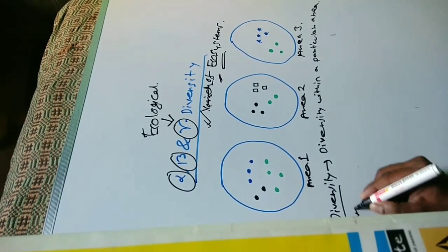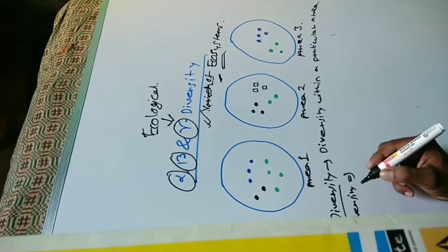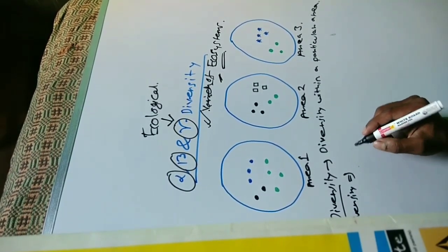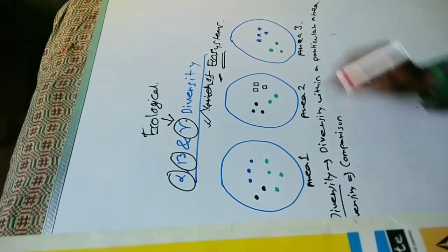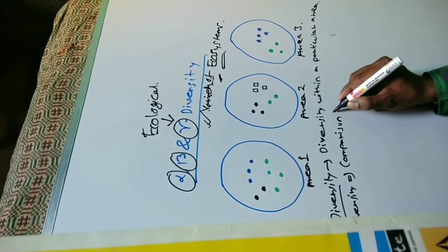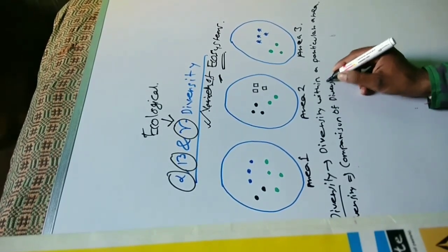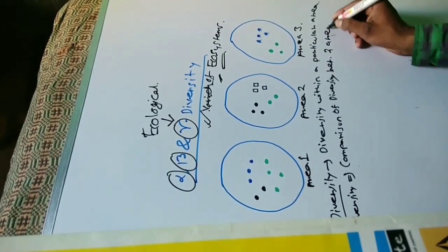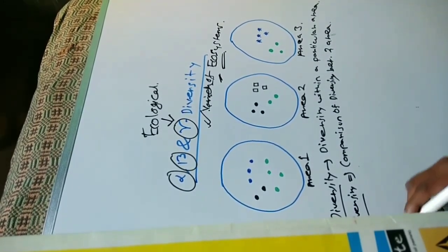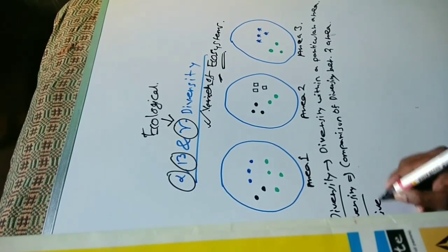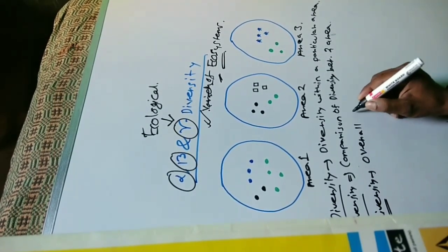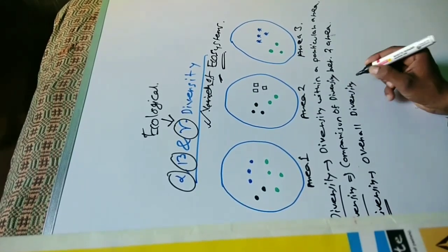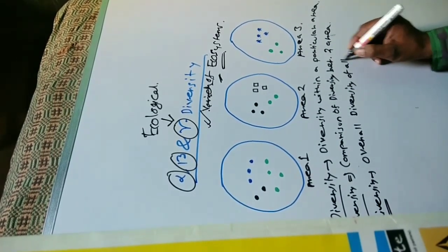What is beta diversity? Beta diversity is actually the comparison between two areas — it is the comparison of diversity between two areas. And what is gamma diversity? Gamma diversity is the overall diversity of all these areas.